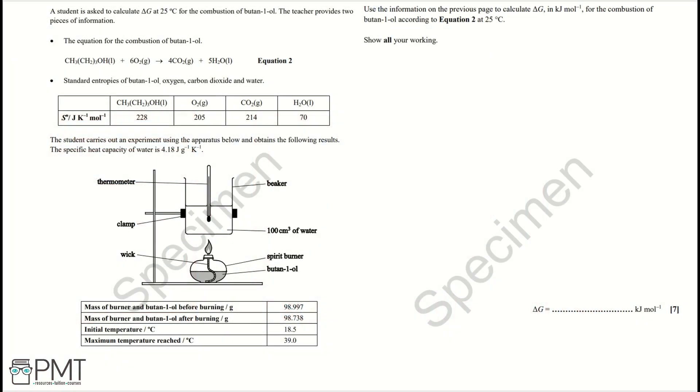A student is asked to calculate delta H at 25 degrees Celsius for the combustion of butan-1-ol. The teacher provides two pieces of information: the equation for the combustion of butan-1-ol, and standard entropies of butan-1-ol, oxygen, carbon dioxide and water. The student carries out an experiment using the apparatus below and obtains the following results.